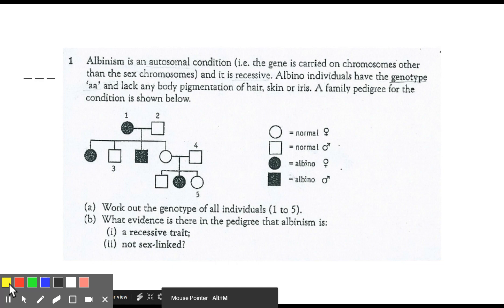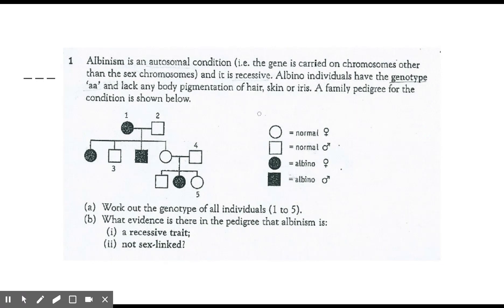Now let's look at a question involving albinism. Albinism is an autosomal condition — the gene is carried on chromosomes other than the sex chromosomes — and it is recessive. Albino individuals have the genotype 'aa' and lack any body pigmentation of hair, skin, or iris. A family pedigree for the condition is shown, and we need to: work out the genotype of all individuals one to five; determine what evidence exists that albinism is recessive; and confirm it is not sex-linked.